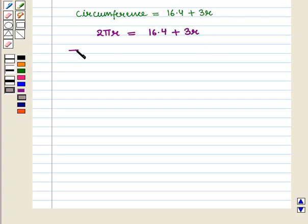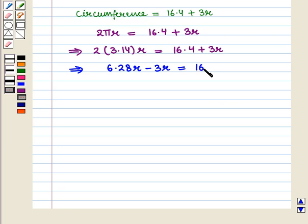This implies that 2 into 3.14 into R equals 16.4 plus 3R, which gives us 6.28R minus 3R equals 16.4.